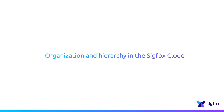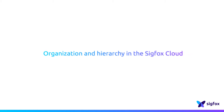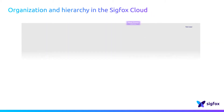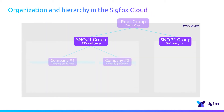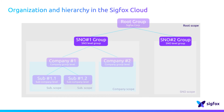The Sigfox Cloud hierarchy is based on groups. Usually, the highest level group is attributed to an SNO for its territory. The root group just above belongs to Sigfox at a global scale.